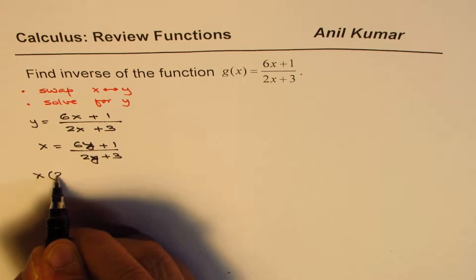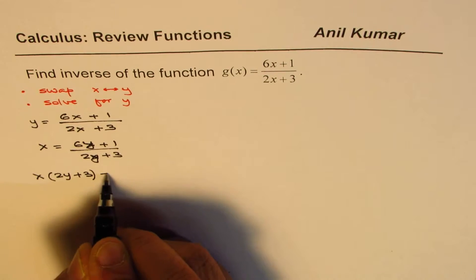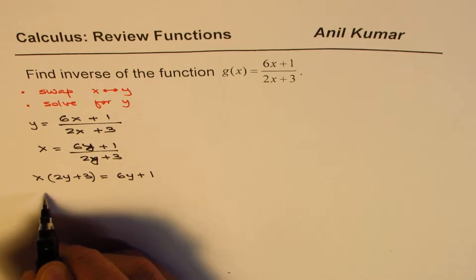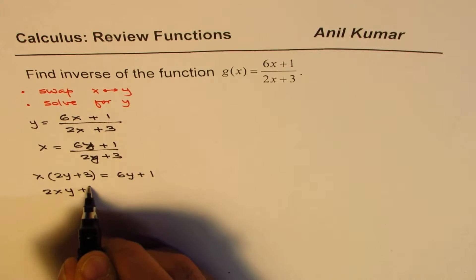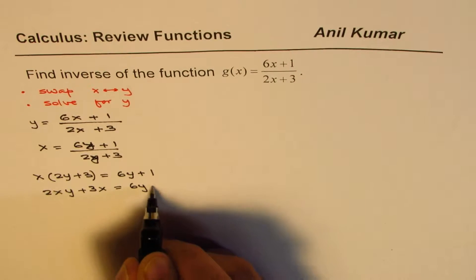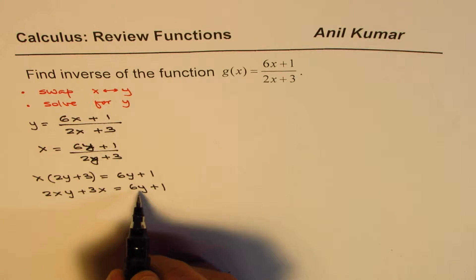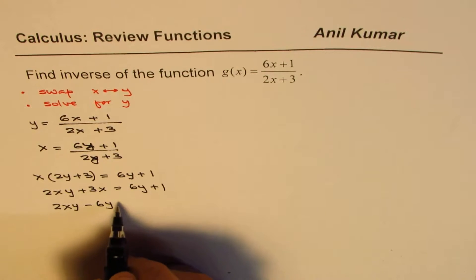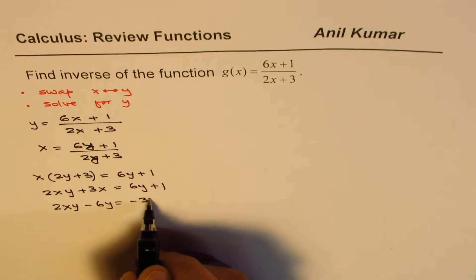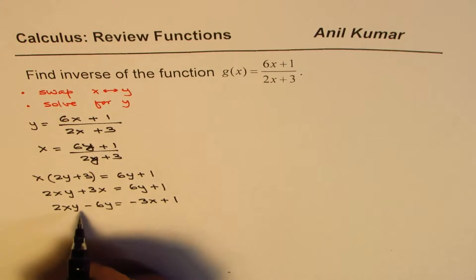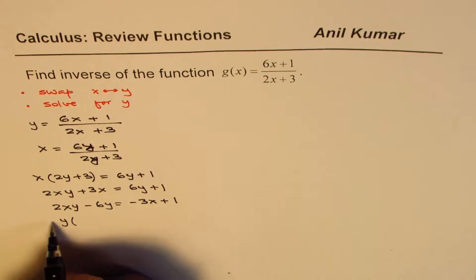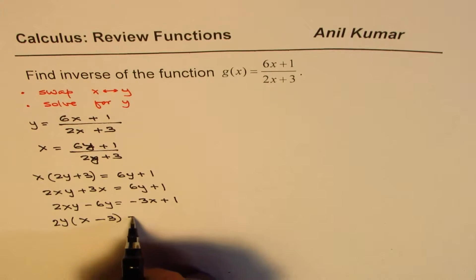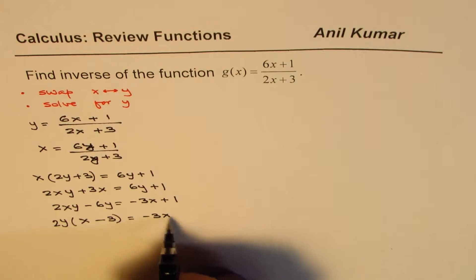Cross multiplying, we get x(2y + 3) = y + 1. Opening the brackets: 2xy + 3x = y + 1. We need to isolate y, so bring y terms to the left: 2xy − y = −3x + 1. Taking y common, and then factoring, we get y(2x − 1) = −3x + 1.